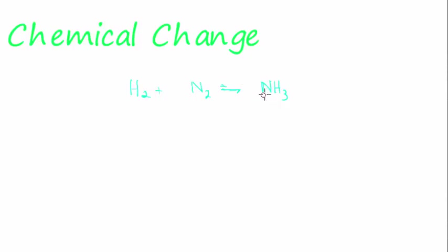This is a reversible reaction. When we have two products producing a single other product, or more than two products producing a single other product, it's called synthesis. If we have one product that breaks up into the parts it consisted of — in other words, the reverse of synthesis — that's decomposition.